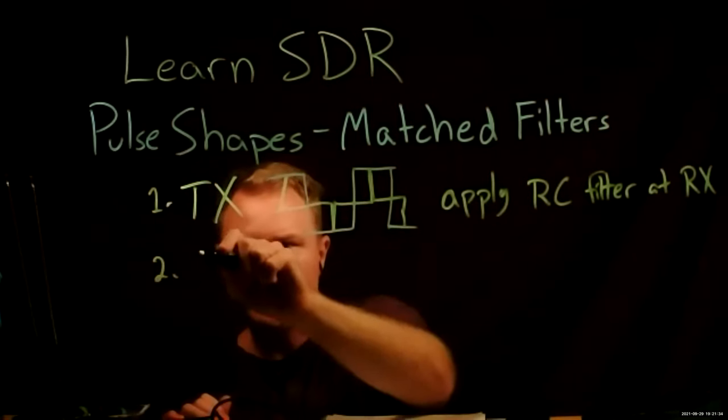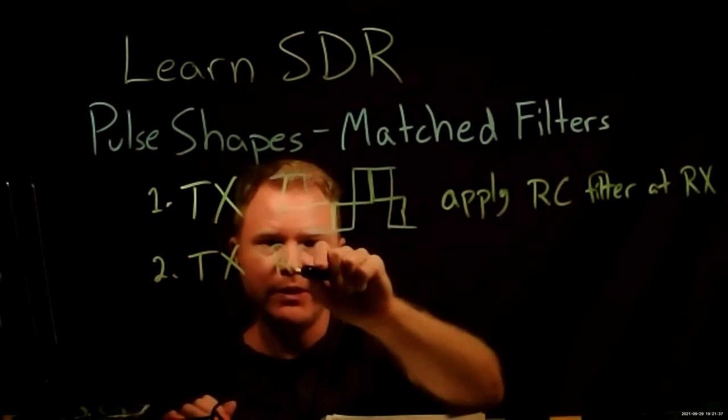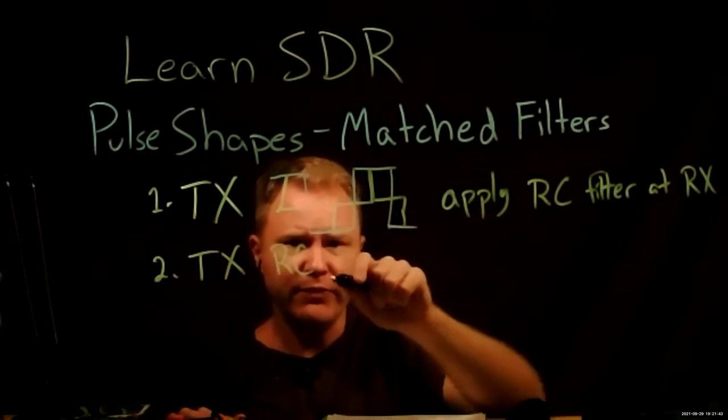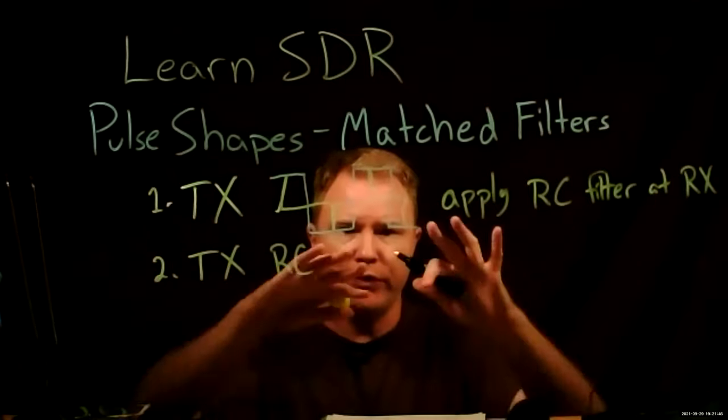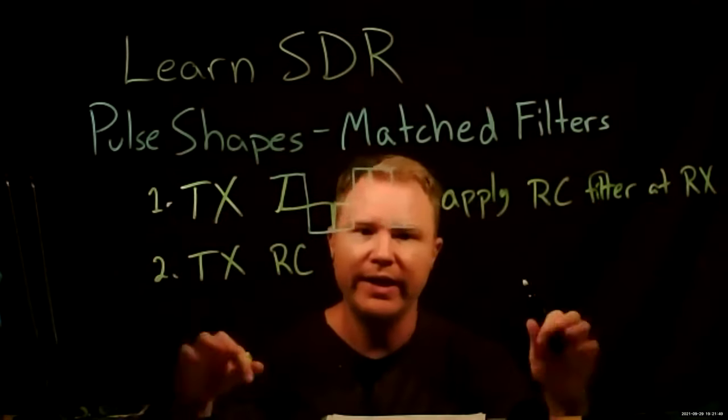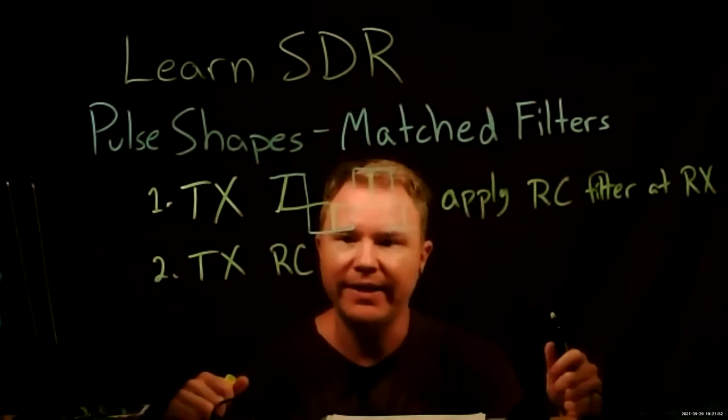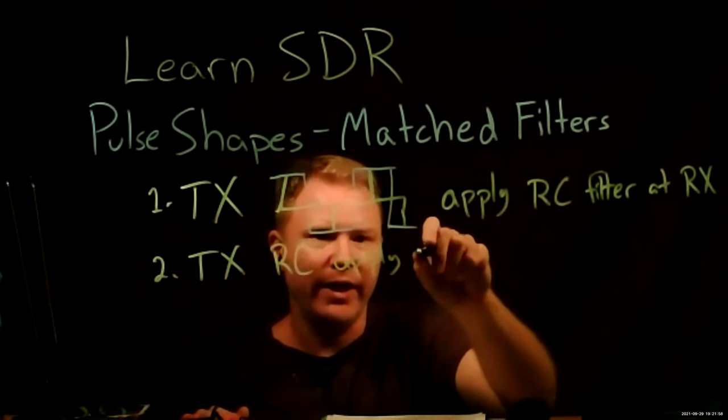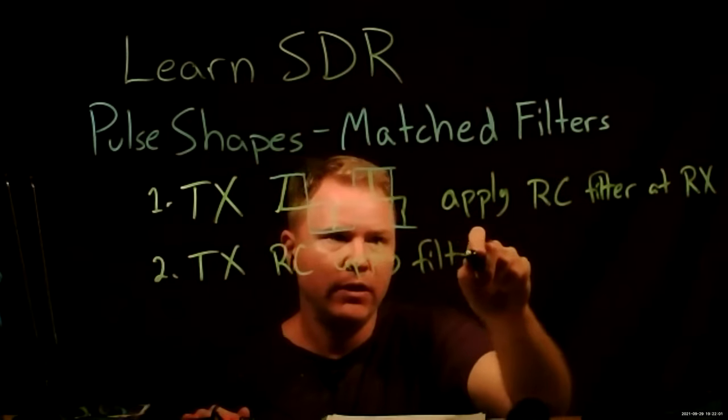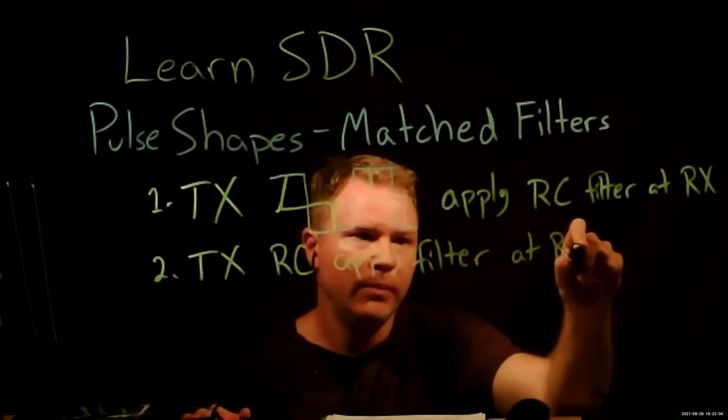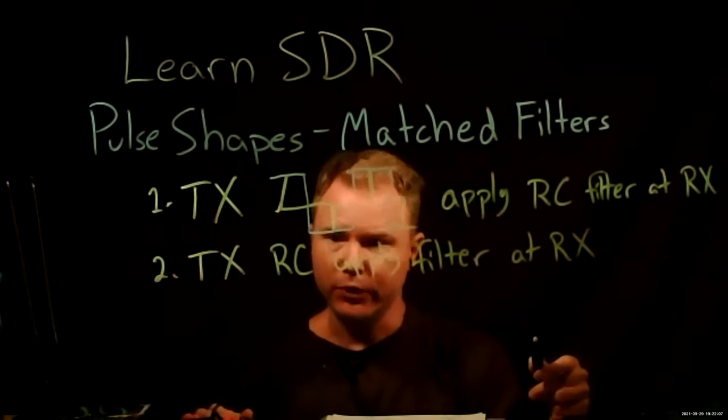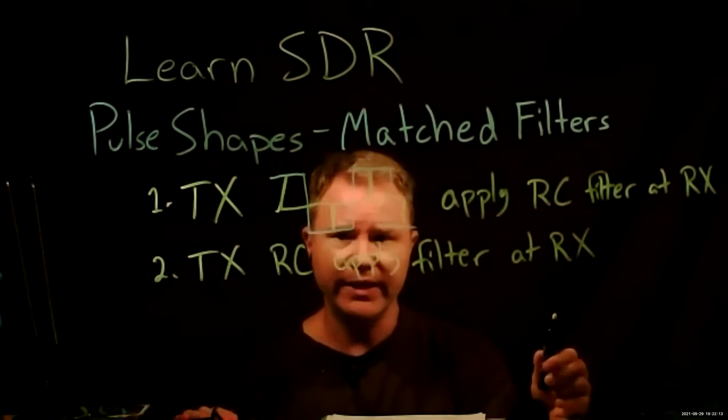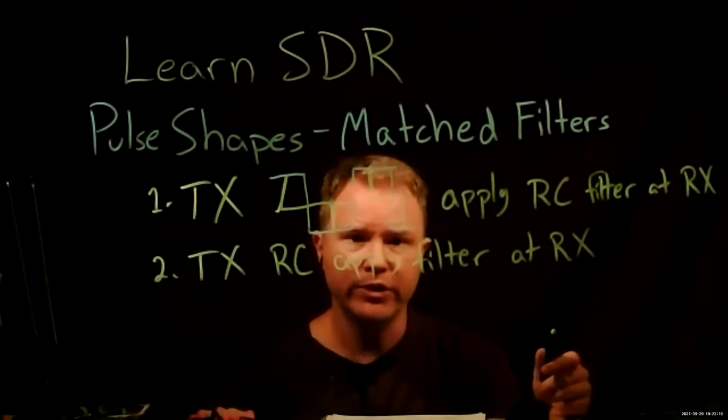So maybe I'll call that option number one. Option number two would be to transmit the raised cosine pulse. But then what do we do at the receiver? Well, okay, so at the receiver we would have to apply some sort of filter, we want to filter out all the noise from adjacent channels, or anything that's out of band, or any noise that's not in the spectral region we care about. So apply some other filter at the receiver. The problem is that any filter we apply at the receiver is probably going to shape the incoming pulse a little bit. And we'll no longer have this nice property where we have this no inter-symbol interference.